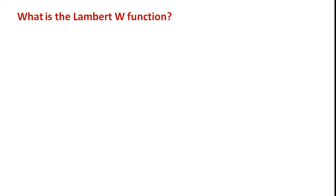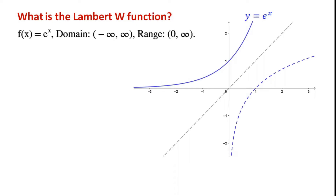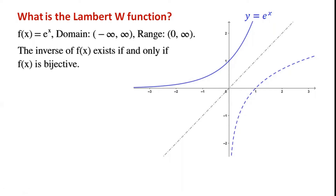Before we talk about the Lambert W function, we look at the function f(x) equals e to the power of x. This is the graph of f(x) equals e^x. The domain is from minus infinity to infinity, and the range is from 0 to infinity. The inverse of f(x) exists if and only if f(x) is bijective — e^x is bijective, so the inverse of f(x) exists.